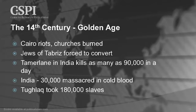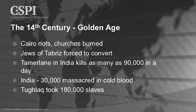Still in the Golden Age — in Cairo there are more riots by the Coptic Christians and churches are burned. Forced conversion of Jews in Tabriz. Tamerlane kills as many as 90,000 Hindus in a day. In India, 30,000 are massacred in cold blood. And Timur, one of the Muslim invaders, took 180,000 slaves.